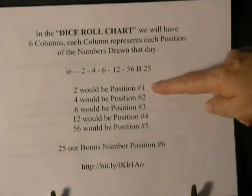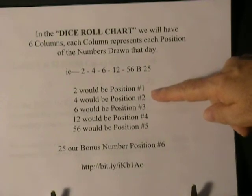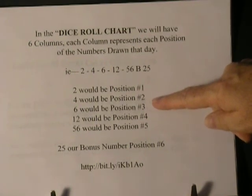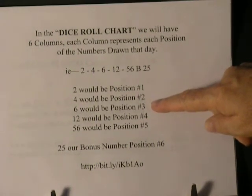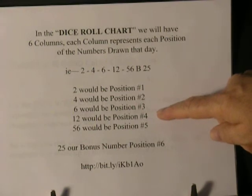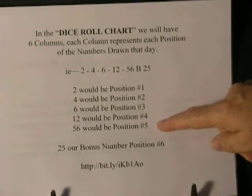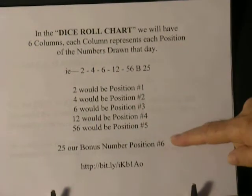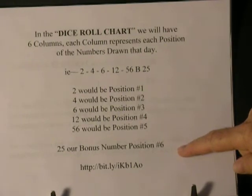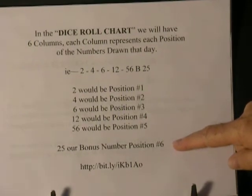Two would be position one, four would be position two, six would be position three, twelve would be position four, fifty-six would be position five, and twenty-five — our bonus number — will be position six.